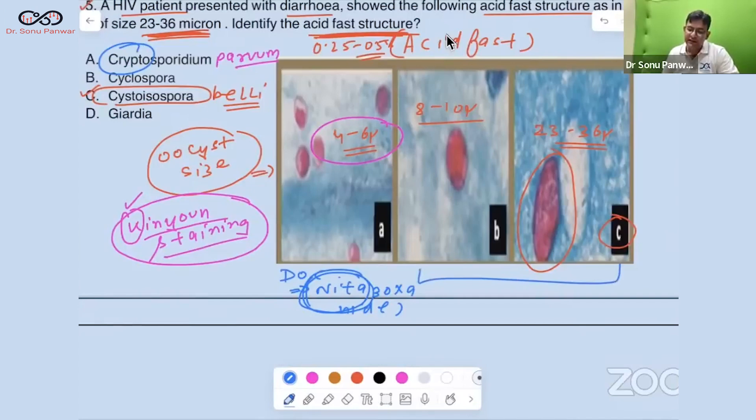And for these two, that is for the Cyclospora and Cystoisospora, what we have? For them, we have Cotrimoxazole. That is for the Cyclospora and the Cystoisospora.